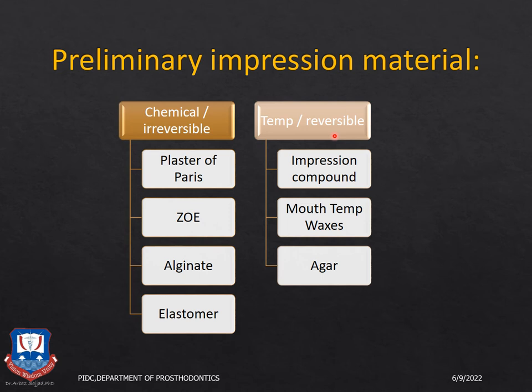In the reversible category, we have impression compound, low-temperature waxes, and agar agar. All of these are thermoplastic reversible impression materials — that is, they react to temperature: when the temperature is raised they liquefy, and when the temperature is lowered they again turn to solids.